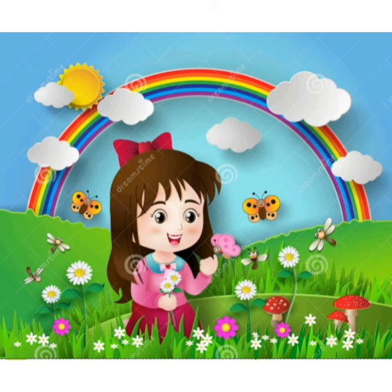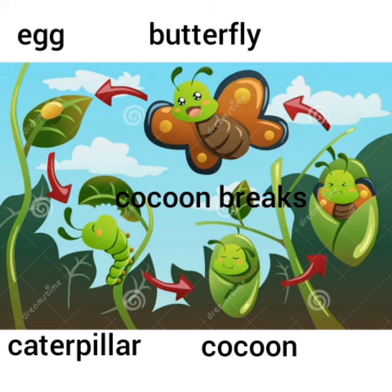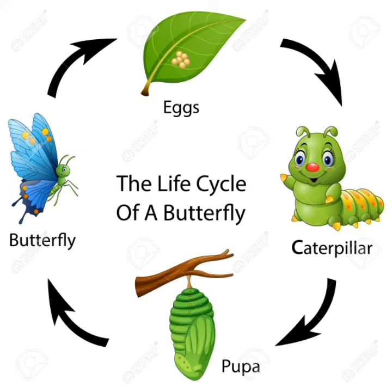Let's remind the lesson. At first, the butterfly lays some eggs. The eggs become caterpillars. The caterpillar eats leaves and grows big. Then the caterpillar makes a cocoon. Next, the cocoon breaks and a beautiful butterfly comes out.